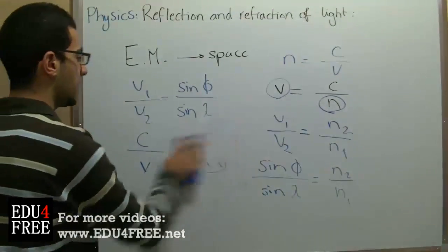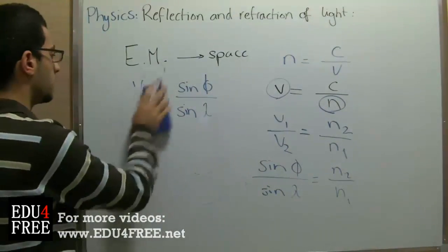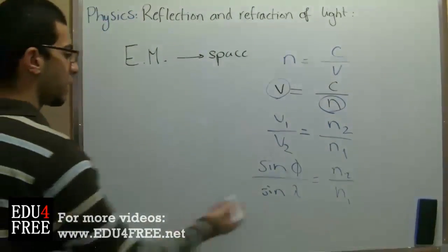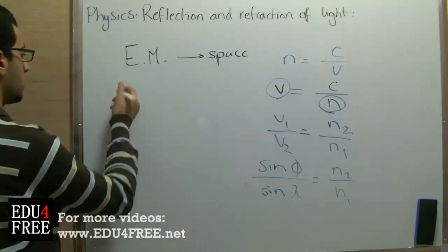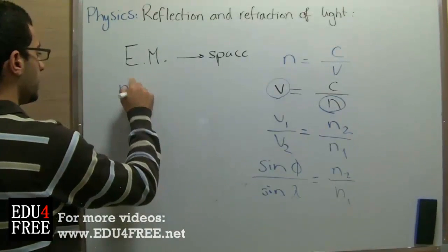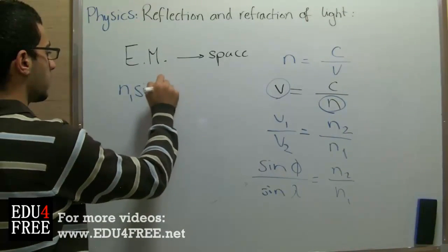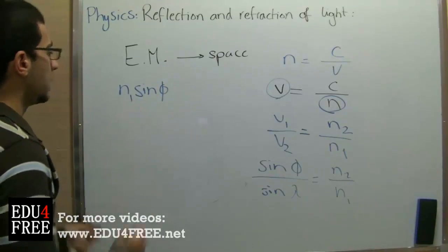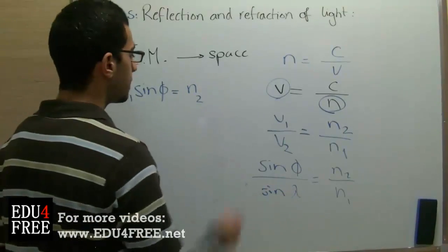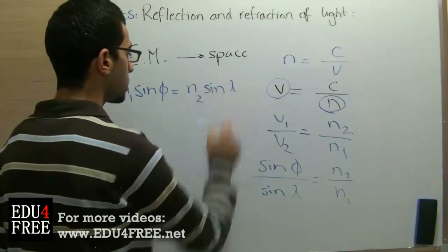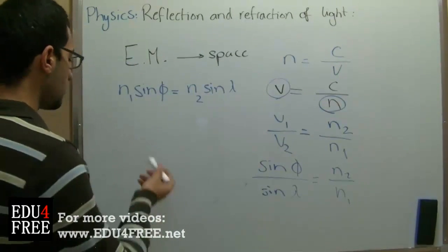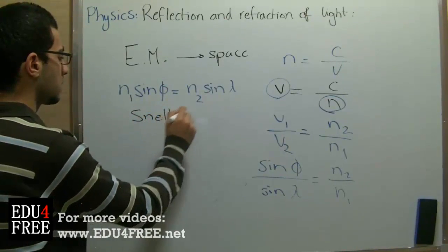And since v1 over v2 already equals sine of the angle of incidence over sine of the angle of refraction, we can finally say that the absolute refractive index of the first medium multiplied by sine of the angle of incidence in that medium equals the absolute refractive index of the second medium multiplied by sine of the angle of refraction in that medium. This law is called Snell's law.